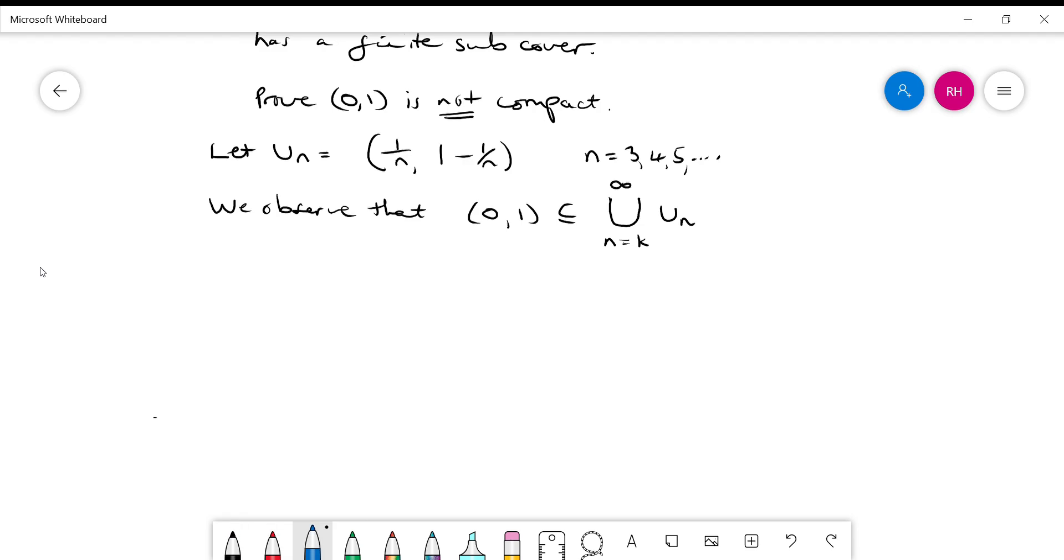So we observe that (0,1) is a subset of the union of all the U_n's from n equals k to infinity. Why is that? Let's have a look. Let's draw a diagram. I might do this properly. I'll even get a ruler out. Make this nice and pretty. So let's draw a line. So there's our real line. So let's put 0 here and 1 here. So now let's write here U_3. So U_3 is equal to the open set from 1/3 to 2/3. So I'm going to approximately write that in.